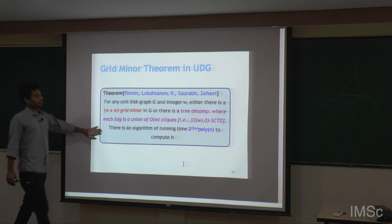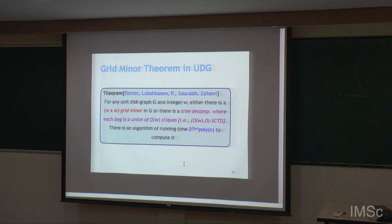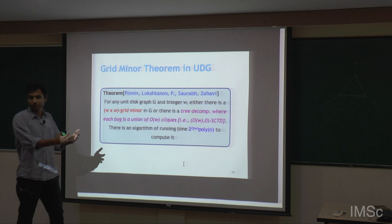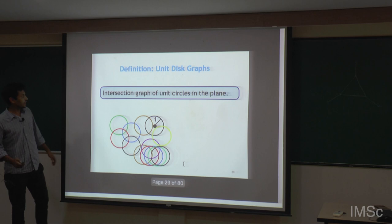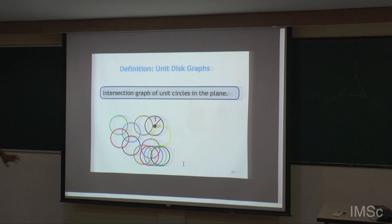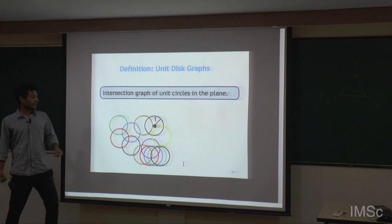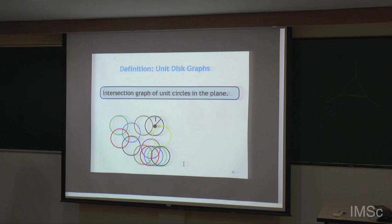This is an example where instead of a normal grid minor theorem, we use a structured tree decomposition. Now I will give a proof sketch. What is a unit disk graph? It is the intersection graph of unit disks in a plane: place a vertex at the center of each disk, and add an edge if two unit disks intersect.